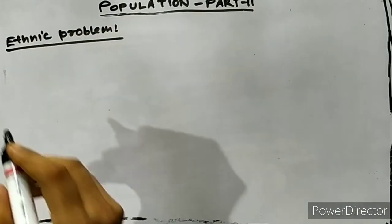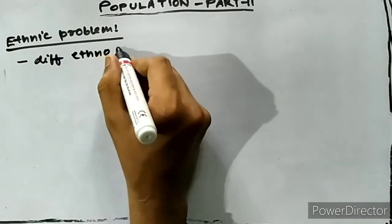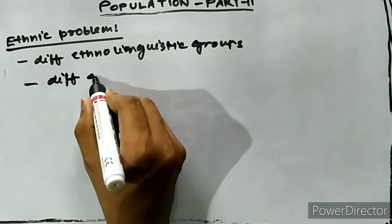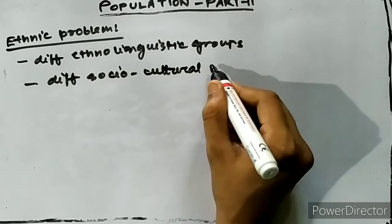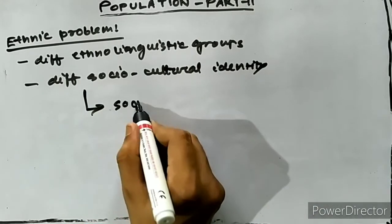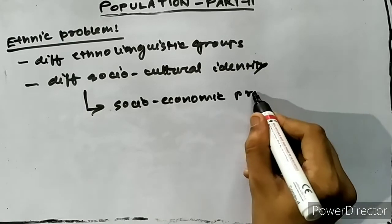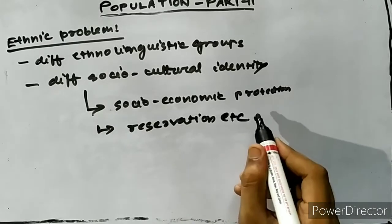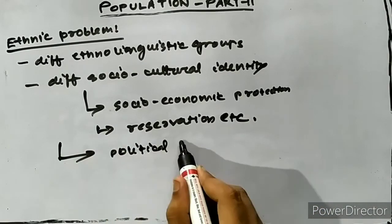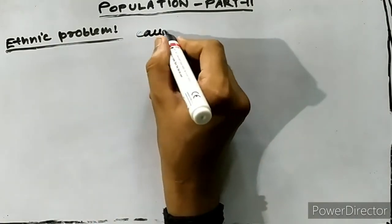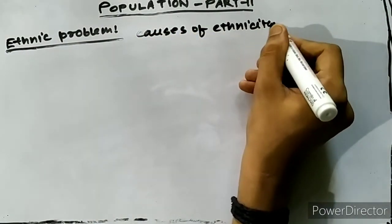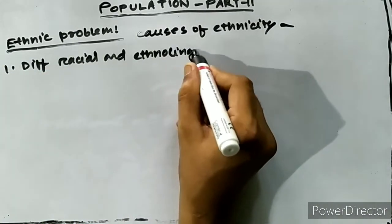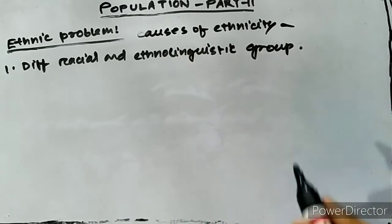The last part of this chapter is the ethnic problem of Assam. As discussed earlier, people of Assam are descendants of different ethno-linguistic groups. Each group stands out as an ethnic group, each claiming a distinct socio-cultural identity and seeking socio-cultural and economic protection and reservation. All of these have led to socio-political unrest in the state for few decades. The causes of this ethnicity include migrants from different racial and ethno-linguistic origins.